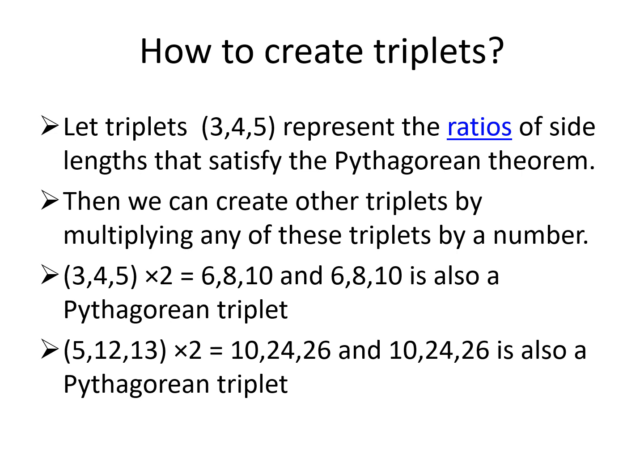Then we can create other triplets by multiplying any of these triplets by a number. Let us take example of (3, 4, 5). Then multiplying it by 2 we will get (6, 8, 10), and that is also a Pythagorean triplet.